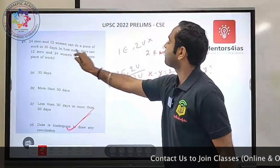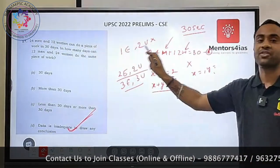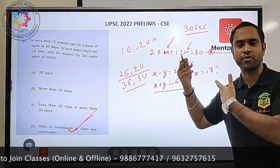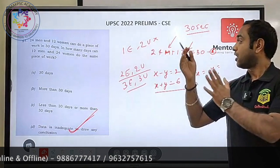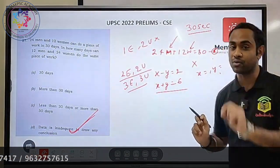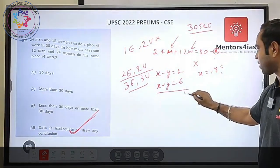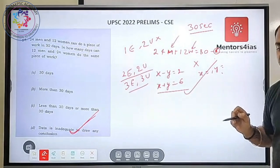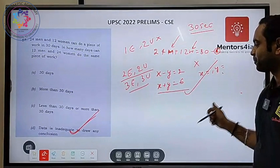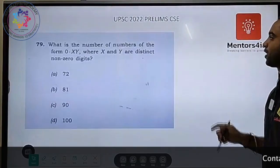If instead the problem had said '24 men and 12 women can do the work in 30 days' AND '40 men and 48 women can do the work in 60 days' — then in how many days can 12 men and 24 women do it? — with two equations you would be able to solve it. That's question number one. If you have any doubt, put your query in the comment box.